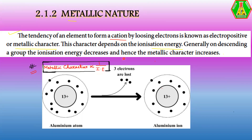As ionization energy increases, metallic character decreases, and as ionization energy decreases, metallic character increases. As we move left to right along the period or along the P-block elements, metallic character decreases. But as we go down the group, metallic character increases, because ionization energy decreases going down the group.